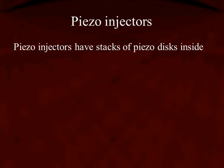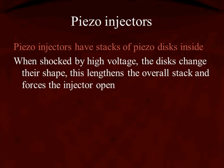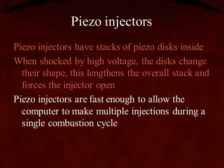These disks are simply crystals — very thin slices stacked on top of each other. When shocked by high voltage, meaning when the PCM commands the signal to the piezo stacked injector, the disk is going to get longer. It changes its shape, and as it lengthens, it forces the injector open. Piezo injectors are very, very fast.